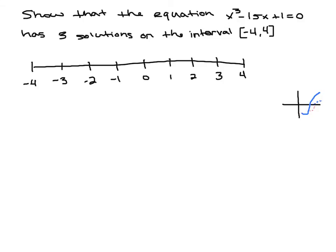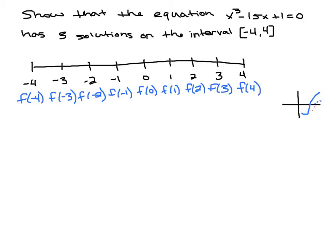I'm going to find the function values of each one of these. I'm not going to be too specific — I'm just going to determine if they're positive or negative. For the first one, f(-4): negative 4 cubed is negative 64, plus 60, plus 1 — I believe that to be negative. f(-3) is negative 27 plus 45 — I think that's positive. So if we keep evaluating the function at these interval points we'll see that they're either positive or negative and we can determine if there's a solution or not.